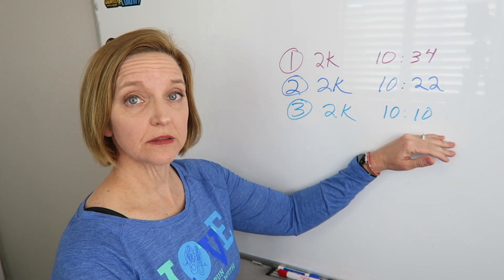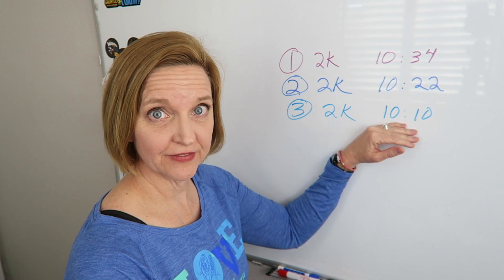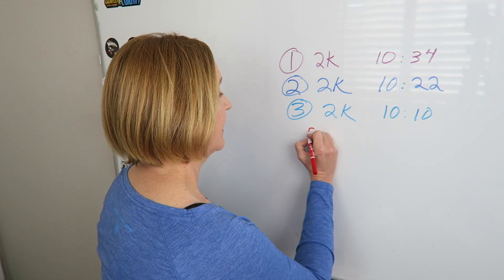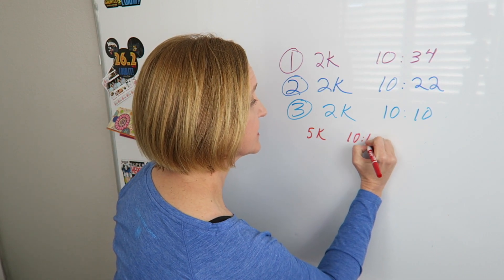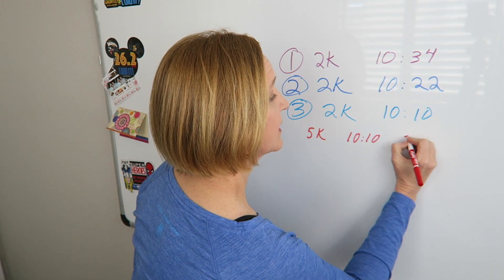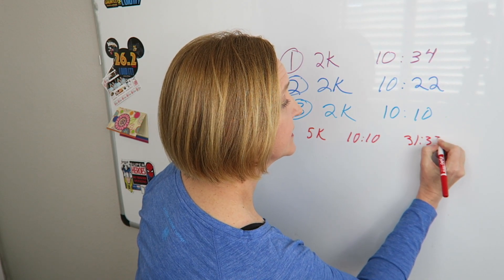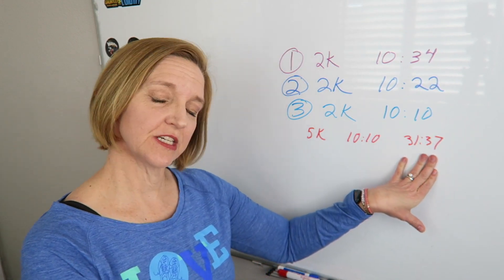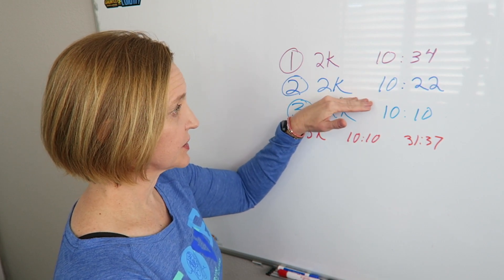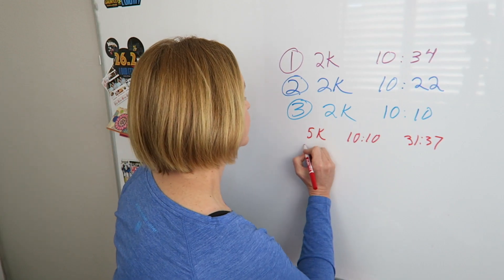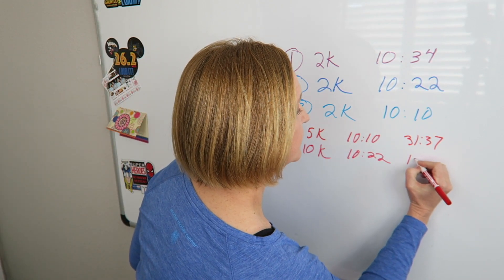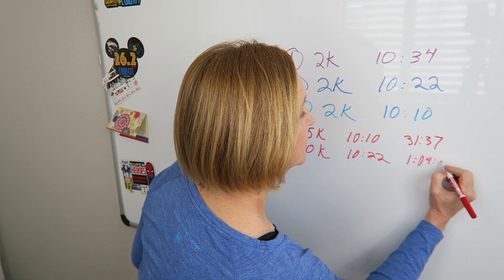This last one can be called my new 5K predicted race pace. So at 5K at 10:10 average pace, that comes up to a 31:37 predicted finish time. If we work backward, this 2K, that second one, is my new 10K predicted pace. And a predicted finish time of 1:04:22.